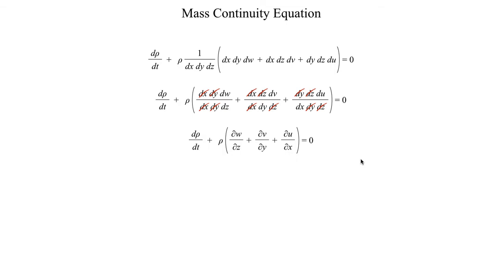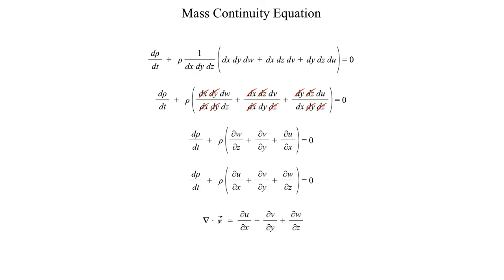Reordering the terms, we get ∂u/∂x + ∂v/∂y + ∂w/∂z. You may remember from multivariable calculus that this quantity in parentheses is just the divergence of the wind field — in other words, our del operator dotted with the wind vector. Evaluating that dot product gives exactly ∂u/∂x + ∂v/∂y + ∂w/∂z, so we can replace that entire expression with ∇·V to simplify things.